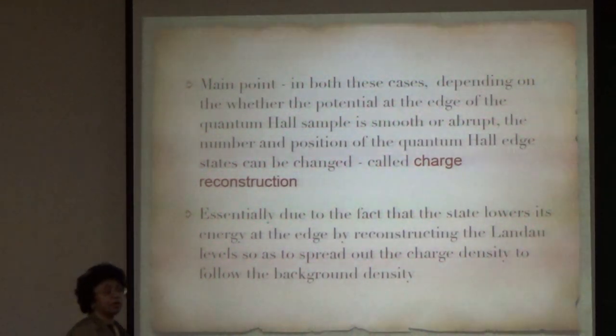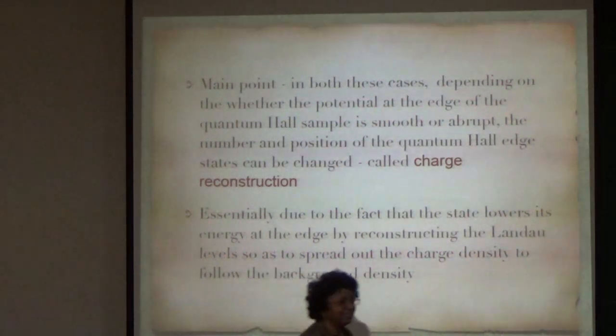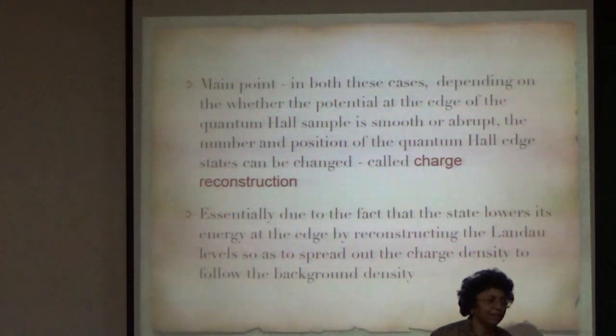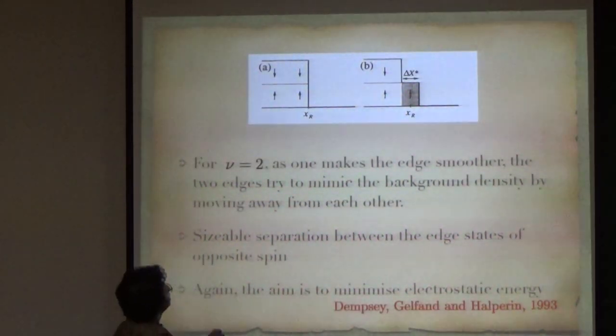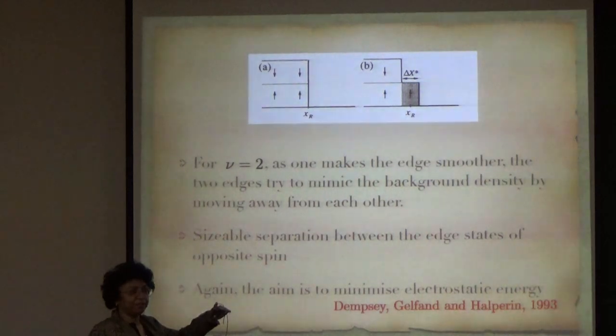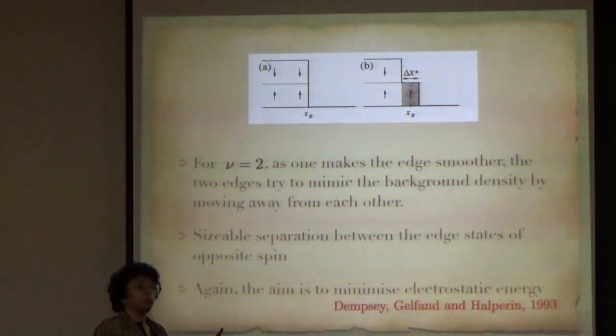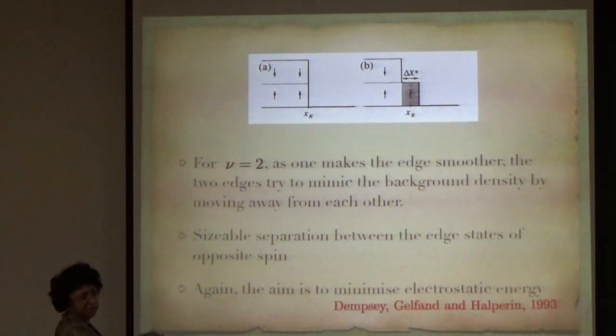At nu equals 2... there are two edges, because nu equals 2 means 0 up and 0 down are filled. The lowest Landau level is filled. But I thought earlier you showed that you would prefer to fill 0 up and 1 up. That is only if the Coulomb energy is above a certain... This is the other case. Those things depend on details of how large your Coulomb interaction. This is when Coulomb interaction is small enough, it will still prefer to do this.